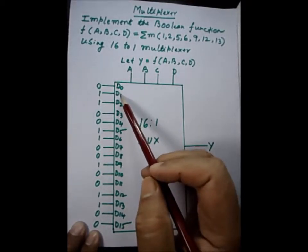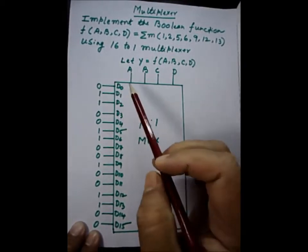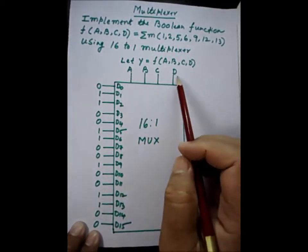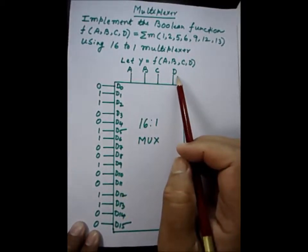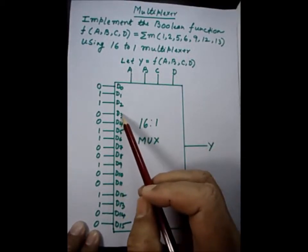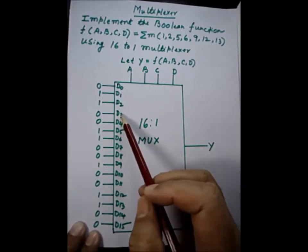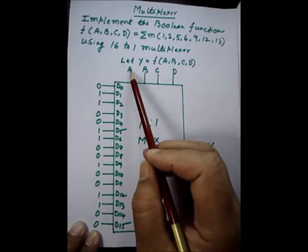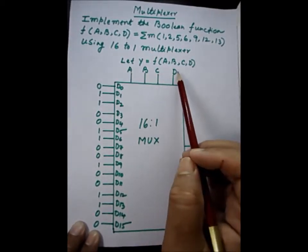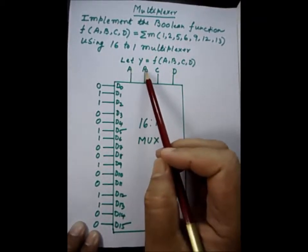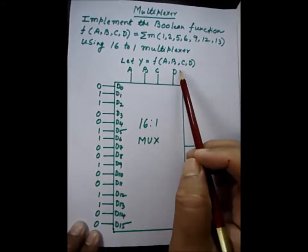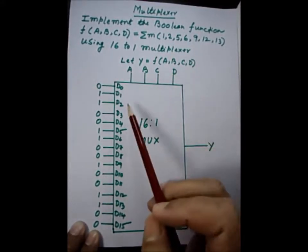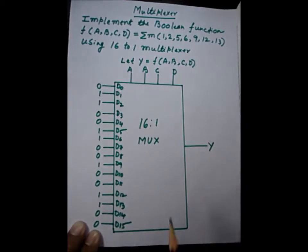So in a simplified way, we convert the input combination to a decimal and look at the subscript of D — that subscript will be the output. For example, A=0, B=0, C=1, D=1 gives decimal 3, therefore the output is D3. This is how the multiplexer works.